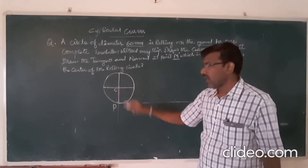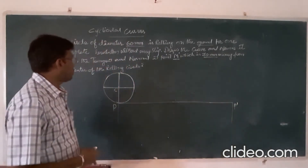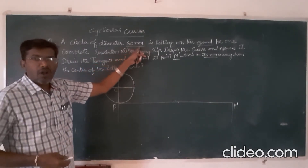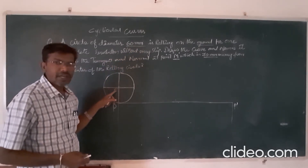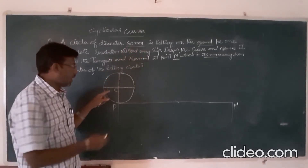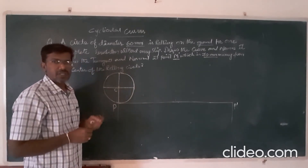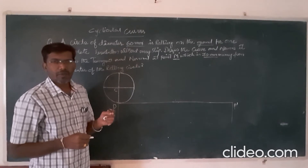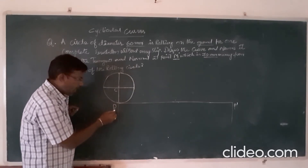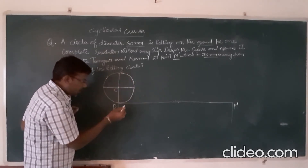Now let us see the constructional procedure of the cycloid. We have a diameter of 60 mm, so take 30 mm as the radius and draw a circle. After drawing the circle, divide it into four equal parts first. Take the bottommost point of the circle as point P, and mark the center point as C.